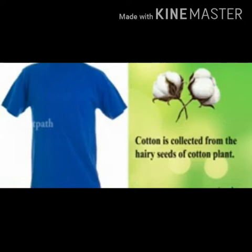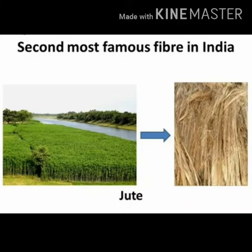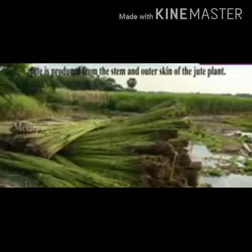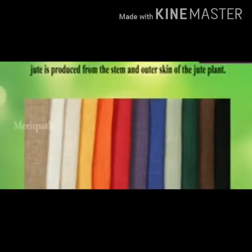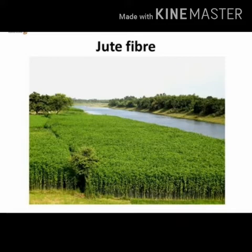Next, we are going to study about jute, which is called the golden fiber in India. It is the second most famous fiber in the world, and India is the largest producer of jute. Jute is produced from the stem and outer skin of the jute plant. Jute is very durable and strong, but it is very rough, so people don't prefer it for clothes. However, we can make bedsheets, carpets, and bags from jute.